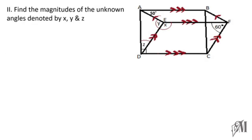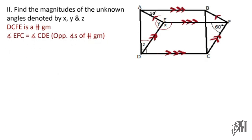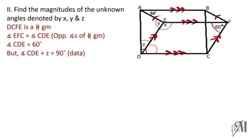The next part is to find the unknown angles x, y, and z. Let's start with z. Since DCFE is a parallelogram, opposite angles are equal — so if this angle is 60 degrees, the opposite angle is also 60 degrees. Since there is a right angle marked as 90 degrees, z equals 90 minus 60, which is 30 degrees.